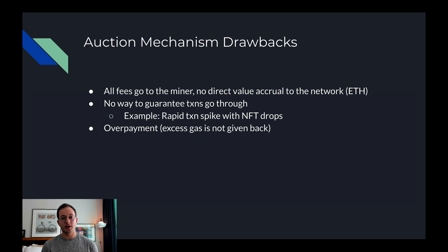For example, in the current model, let's say I really need a transaction to go through on the very next block. I might bid a crazy gas price to make sure that happens. My transaction may very well go through, but I might have also overpaid — I might not have needed to spend that much to ensure the transaction would happen in the next block.